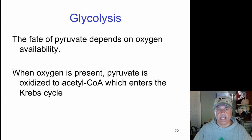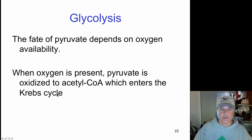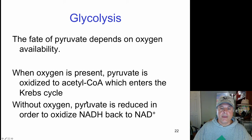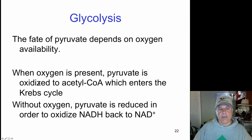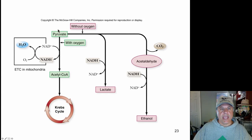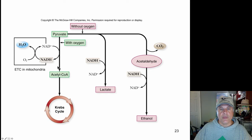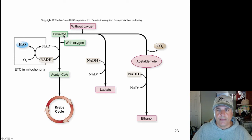Let's examine how pyruvate ties into the recycling of NAD+ needed to keep glycolysis going. When oxygen is present, pyruvate is oxidized to acetyl-CoA, which enters the Krebs cycle. When oxygen is absent, pyruvate can be reduced in order to oxidize NADH back to NAD+. Either way, pyruvate plays a role — either being oxidized or being reduced — to recycle NAD+. Without oxygen, pyruvate cannot enter the respiratory pathway because oxygen is unavailable as the final electron acceptor.